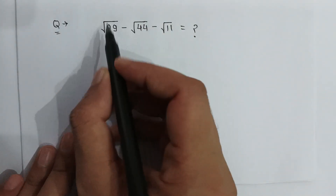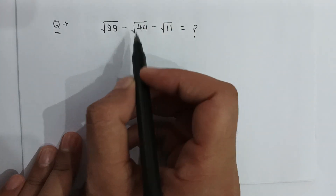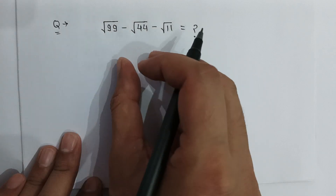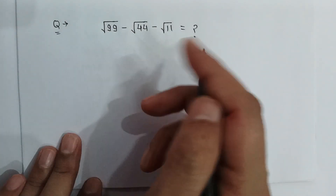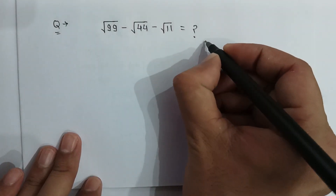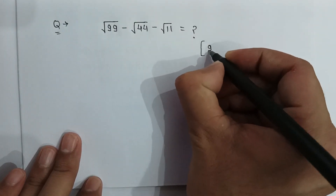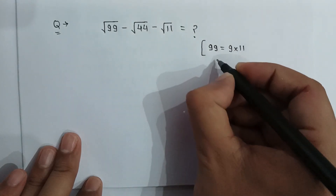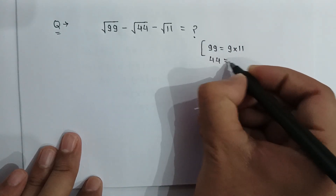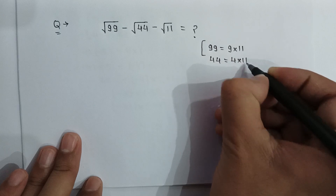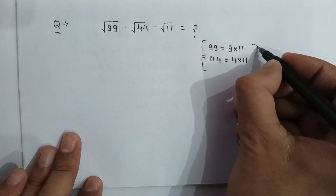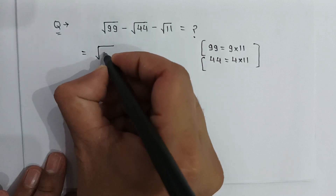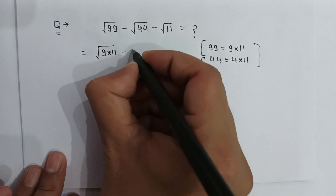The problem is square root of 99 minus square root of 44 minus square root of 11. Find the value of this expression. We can rewrite 99 as 9 multiplied by 11, and 44 as 4 multiplied by 11. So it can be written as square root of 9 multiplied by 11, minus square root of 4 multiplied by 11, minus square root of 11.